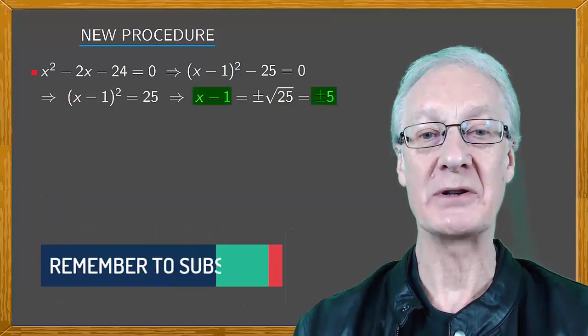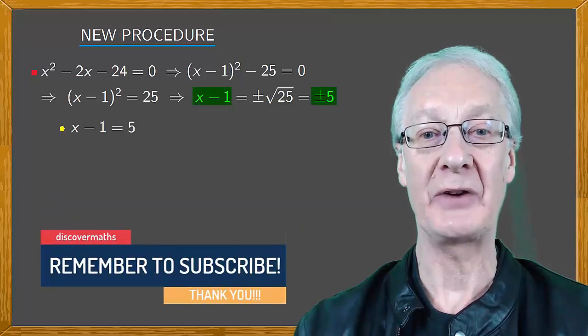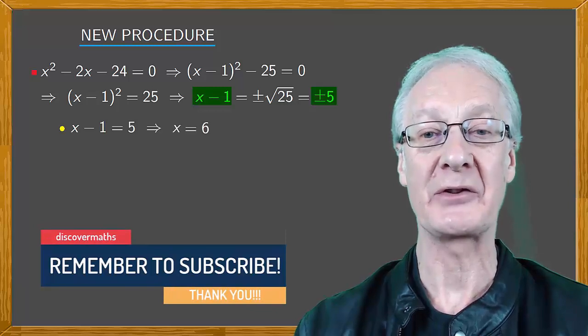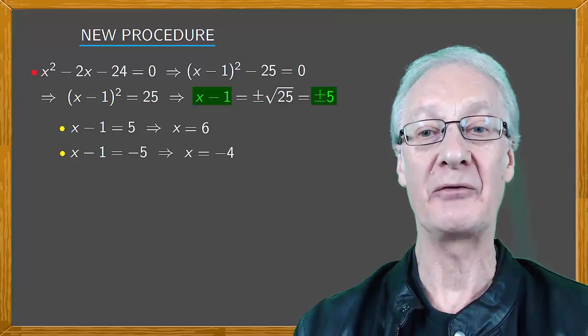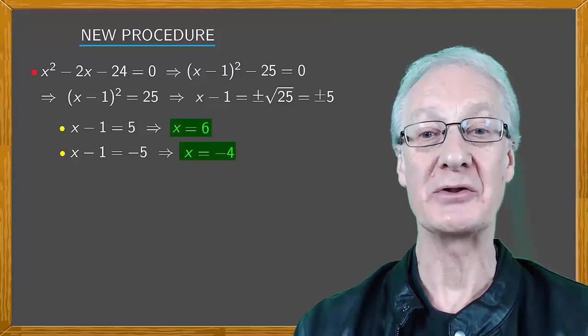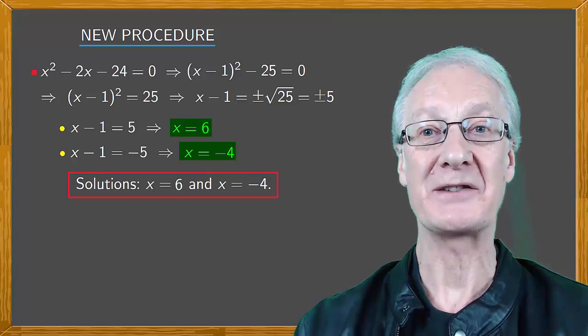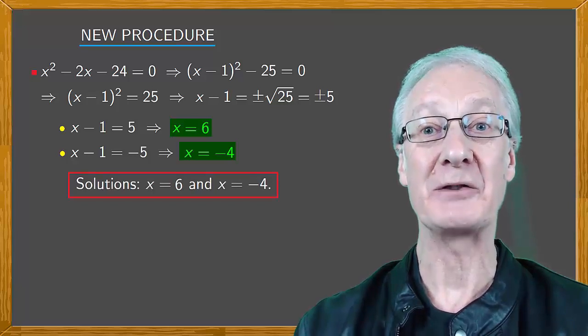This gives us two options. x minus 1 equals 5, so that x equals 6, or x minus 1 equals minus 5, so that x equals minus 4. And there are the solutions of our equation. x equals 6, and x equals minus 4.